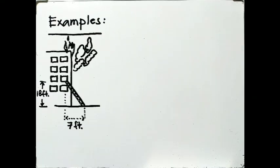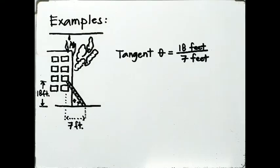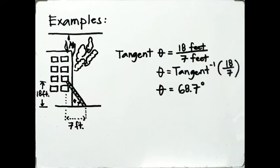The next example: a condominium is on fire and Ms. ERA is to be saved by Private Ryan using a ladder. What is the angle of inclination of the ladder from the road surface so that its footing is 7 feet from the bottom of the building? The height of the window ledge is 18 feet from the bottom. The equation is: tangent θ = 18 feet / 7 feet. Thus, θ = tangent inverse of (18/7), which equals 68.7 degrees.